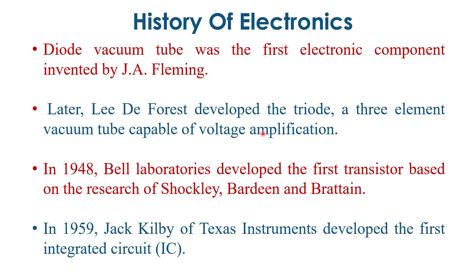In 1948, Bell Laboratory developed the first transistor. After that, in 1959, the IC — the integrated circuit — was developed. The integrated circuit basically reduced the size of electronic components and electronic equipment, making a revolutionary change in the field of electronics. When ICs came to market, different ranges of products came out.